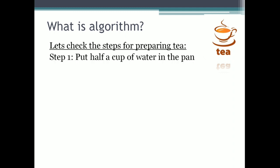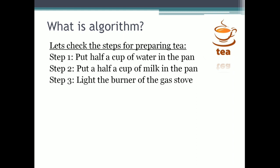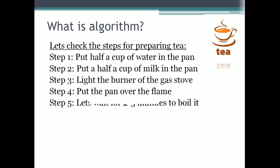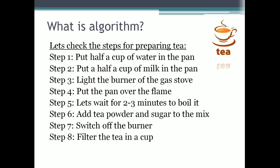The first step for preparing a cup of tea is put half a cup of water in a pan. Second step, we have to put milk in the same pan. Third step, we have to light the burner of the gas stove. Step number 4, put the pan over the flame. Step number 5, wait for 2 to 3 minutes to boil the mix of water and milk. Step number 6, add tea powder and sugar to the mix of water and milk. Step number 7, switch off the burner. And the final step is filter the tea in a cup.